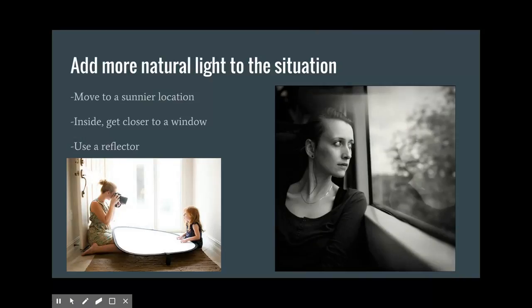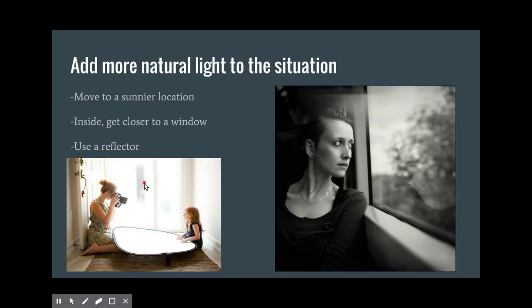If there's not enough light, add more natural light. Move your subject to a sunnier location or get closer to a window, as you can see here. You can also use a reflector — if light is hitting the ground or to the side, capture that light and bounce it onto whatever you're photographing.